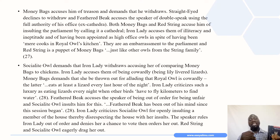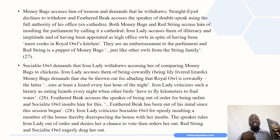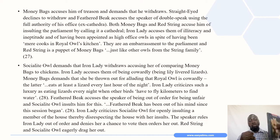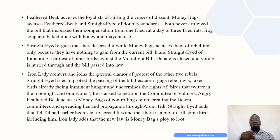Iron Lady accuses them of being cowardly — calling them lily-livered lizards. Moneybags demands that Iron Lady be thrown out for alluding that the royal owl is cowardly. Iron Lady further criticizes the luxury of eating lizards every night when other birds have to fly kilometers to find water. Feathered Beak accuses the speaker of being unfair since the session began. Iron Lady criticizes the Socialite Owl for openly insulting a member of the house. The speaker rules Iron Lady out of order, denies her a chance to vote, and orders her out. Red String and Socialite Owl eagerly drag her out.